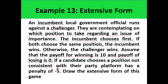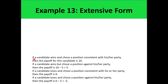Now that we have underscored the important information, we can draw the extensive form. To summarize: if a candidate wins and chooses a position consistent with the party, the payoff is 10 with no penalty. If a candidate wins but chose a position against the party, the payoff of winning is 10 but with a deduction of 5 points, so the total payoff is 5. If a candidate loses and chooses consistent with the party, the payoff is 0 with no penalty. But if a candidate loses and went against the party, the payoff is negative 5.